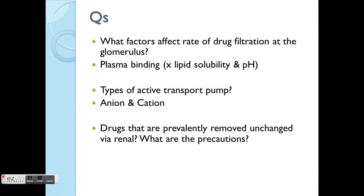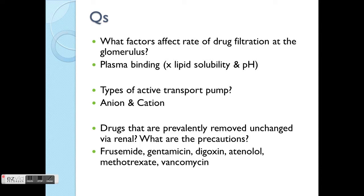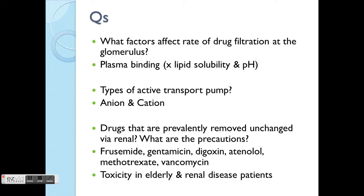There are also drugs which are removed unchanged via the renal route — going back to basics on ADME. Certain drugs undergo extensive metabolism before elimination, but some drugs do not really undergo much metabolism, meaning the drug goes through absorption, distribution, and directly to elimination. Examples include furosemide, gentamicin, and digoxin. The main precaution is that if the patient has renal disease, or elderly patients with lower renal function, the whole process is slower and less efficient — this subgroup of patients has a higher risk of toxicity.